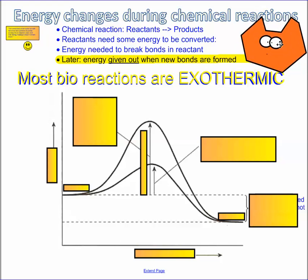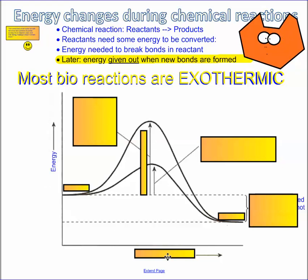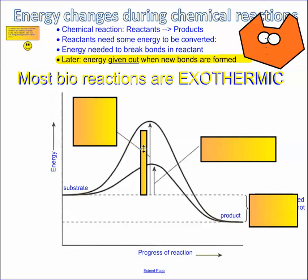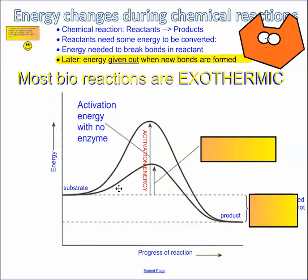Here's an enzyme with its active site. When we look at a typical graph showing an enzyme-catalyzed reaction, the x-axis shows the progress of the reaction and the y-axis shows the relative energy level. We have the substrate, which is going to be converted to the products at the end. This is the energy required to normally make the reaction happen — it's called the activation energy — and this is what it looks like when there is no enzyme present.